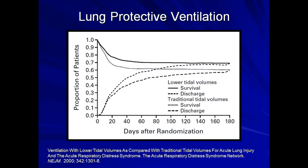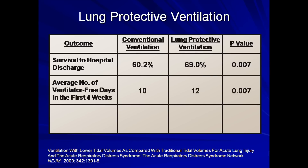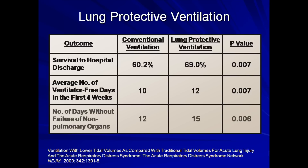Here is the primary outcome. The lower tidal volume group had higher rates of survival and hospital discharge. In the conventional ventilation group, 60.2% survived to discharge, while 69% did so in the lung protective ventilation group. The average number of ventilator-free days in the first four weeks was 10 in the conventional group and 12 in the protective group. Finally, the number of days without failure of a non-pulmonary organ was 12 in the conventional group and 15 in the protective group. This last result also highlights that ARDS and the subsequent ventilator-associated lung injury is a systemic disorder with consequences throughout the body.